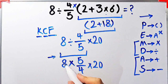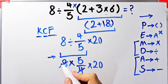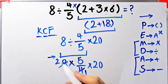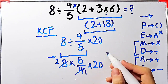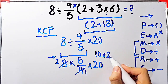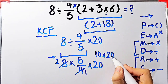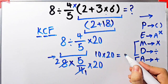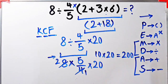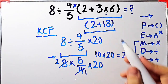We can simplify: 8 and 4 divided by 4 gives 2 and 1. Now we have 2 times 5, then times 20. 2 times 5 equals 10. Now we have 10 times 20, and 10 times 20 equals 200. The final answer of this question equals 200.